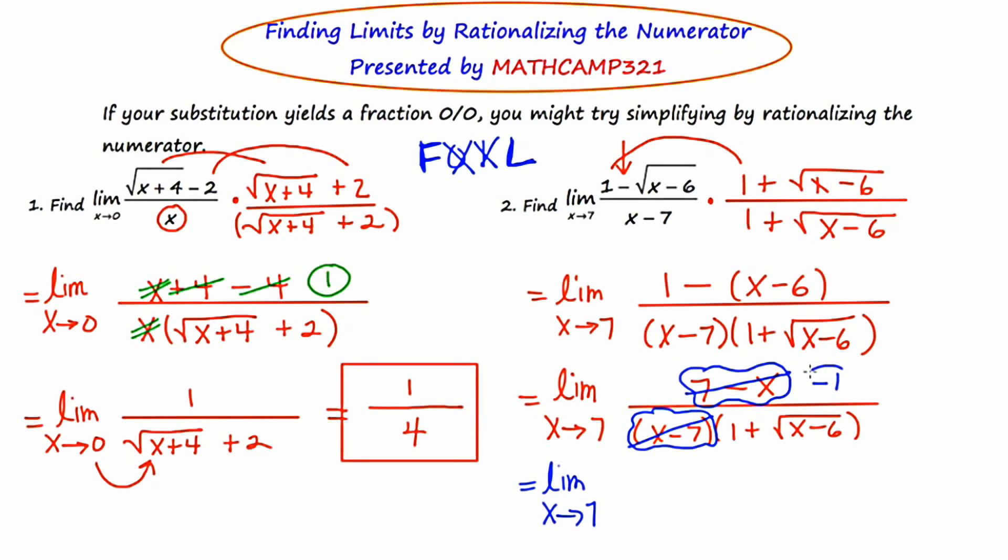So the top really boils down to a negative one when you do that canceling. So what we're really left with is negative one on the top, and then one plus the square root of x minus six on the bottom. Okay, so now we're going to plug in the seven, and we're going to be done. So the numerator is just negative one, there's nothing to plug in for there.